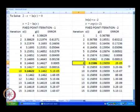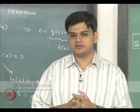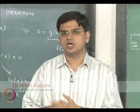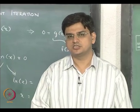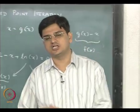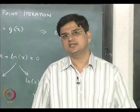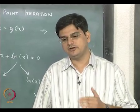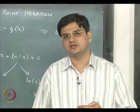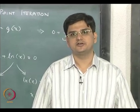Starting with x i equal to 1 and a stopping criterion that the error should fall below 10 to the power minus 4, the solution is 0.1586 — that is the solution using fixed point iteration method 2. The fixed point iteration under certain conditions converges to the solution; under certain other conditions it does not. In the next lecture, we will cover how the fixed point iteration converges and under what conditions it fails to converge.